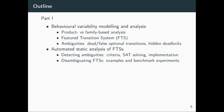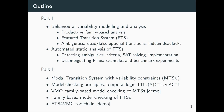I'll explain what we consider behavioral ambiguities: dead and false optional transitions, hidden deadlocks, and their mirrored counterparts from feature modeling. Then there'll be a part on efficient, automated static analysis of feature transition systems — detecting ambiguities, defining criteria, applying SAT solving, and explaining the implementation in detail. Throughout the tutorial there will be references to literature, and we'll share the slides.